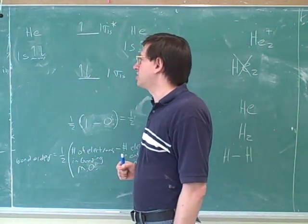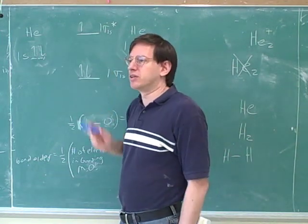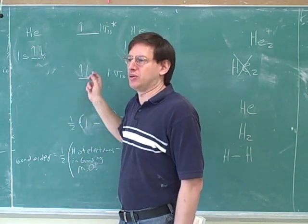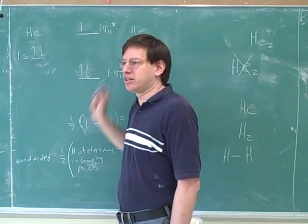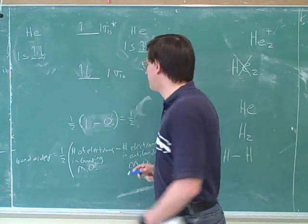So we're still using the idea of conservation. Just like the number of molecular orbitals is the same as the number of atomic orbitals, the number of electrons in the atoms has to be the same as the number of electrons in the molecule. Since the atoms are contributing three electrons, we have to place three electrons in the molecular orbitals. All right. Now what would the bond order be?